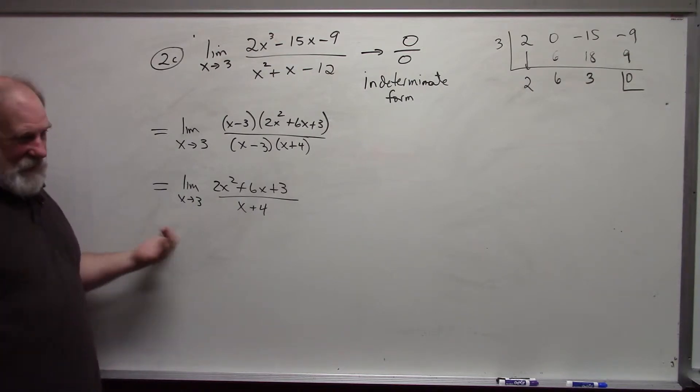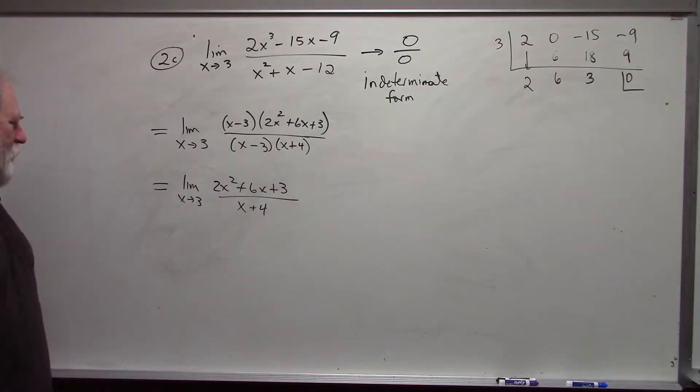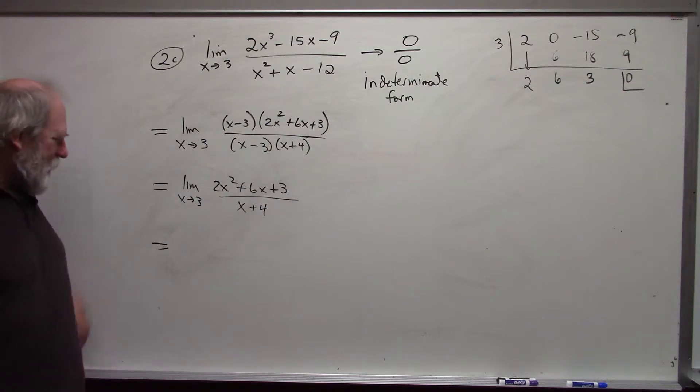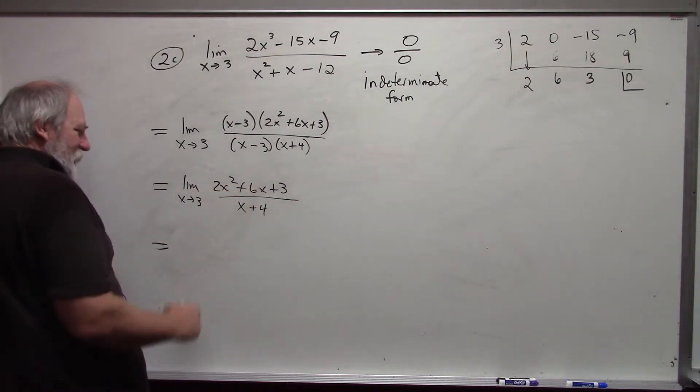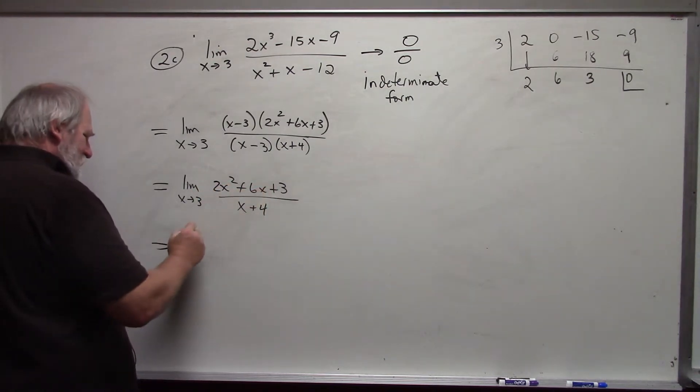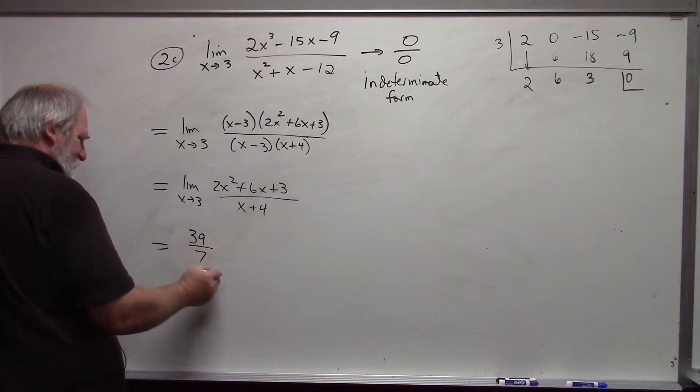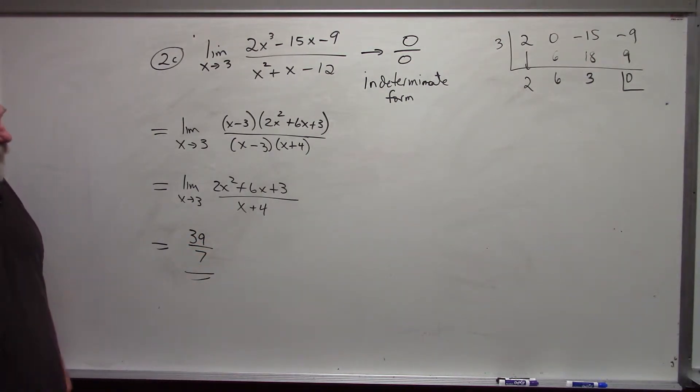The limit means that we are not letting x be 3. We are approaching 3. But the value is going to be the same as if x were 3. And so then we can evaluate this. The limit is going to be 18 plus 18 plus 3 is 39 over 7. And that is the value of the limit in this particular case.